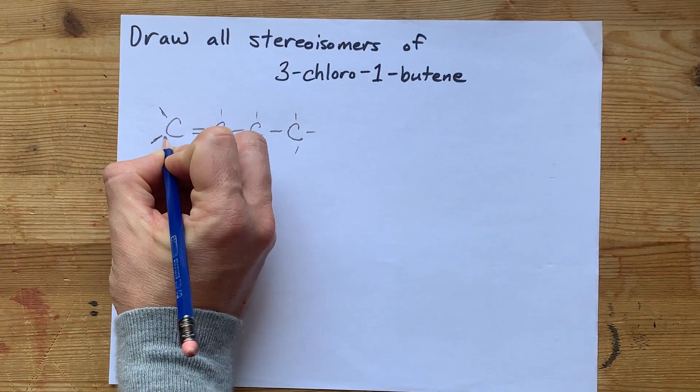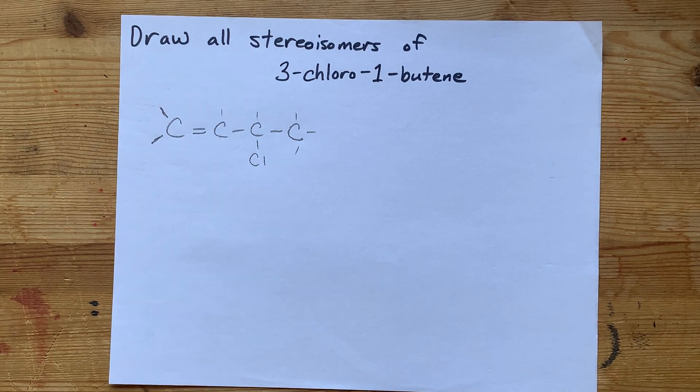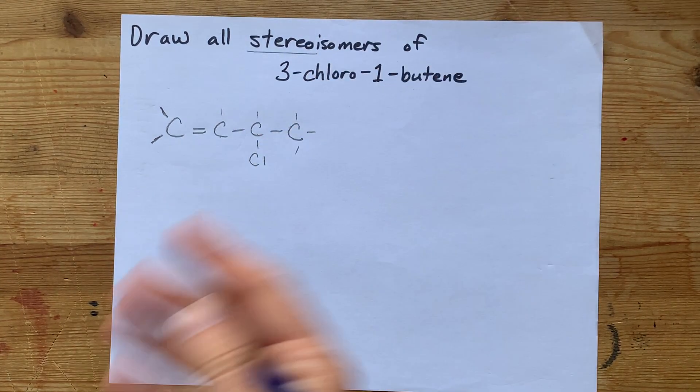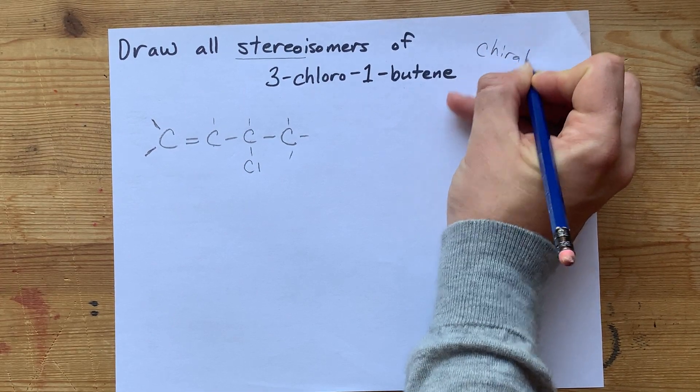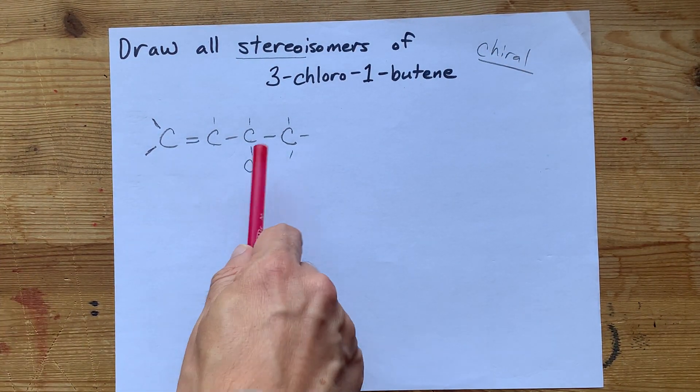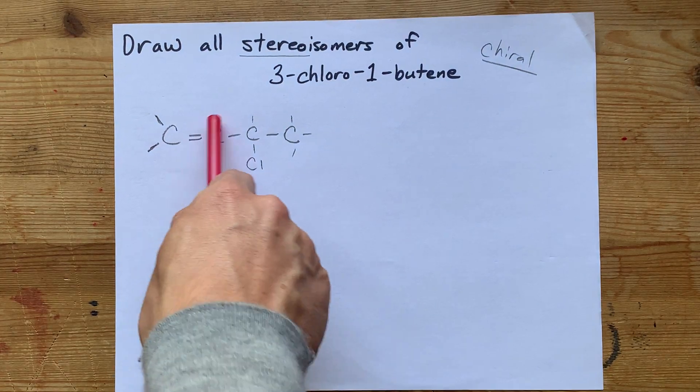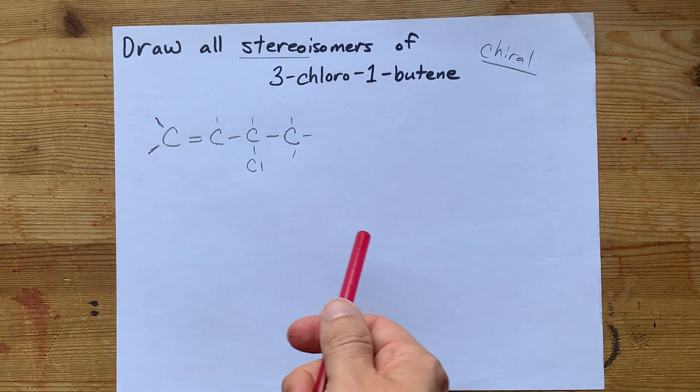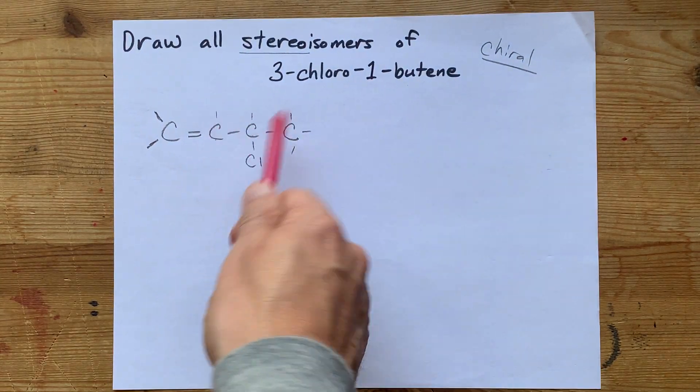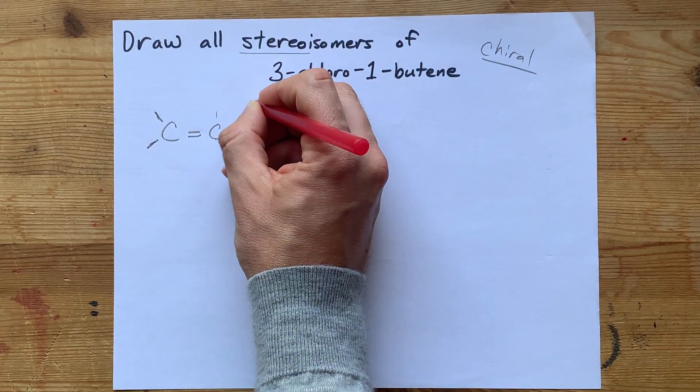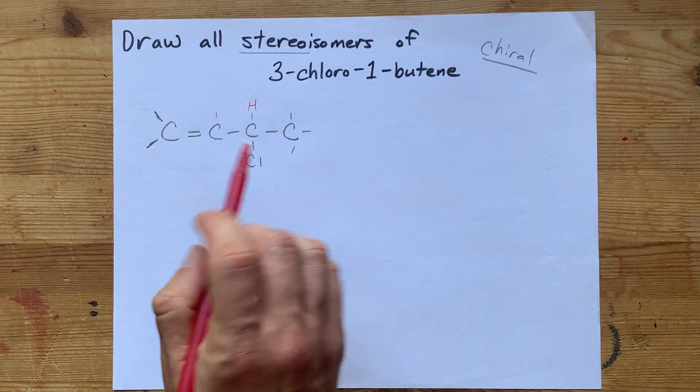We are actually just being asked for stereoisomers. So what I'm going to do is I'm going to look for chiral centers. This carbon is connected to three things. It doesn't have any chirality. This carbon has four things connected to it, and actually, all four of those things are different.